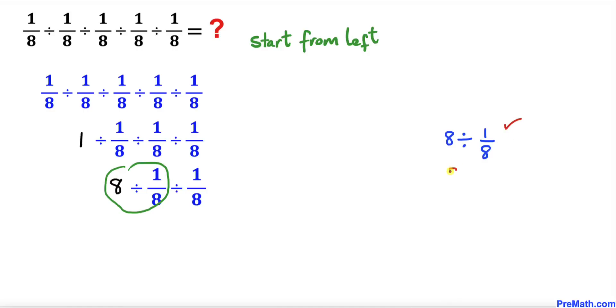So this could be written as 8 times, we are going to flip this one over, so this could be written as 8 over 1 which is same as 64. And here this part has been simplified to 64.